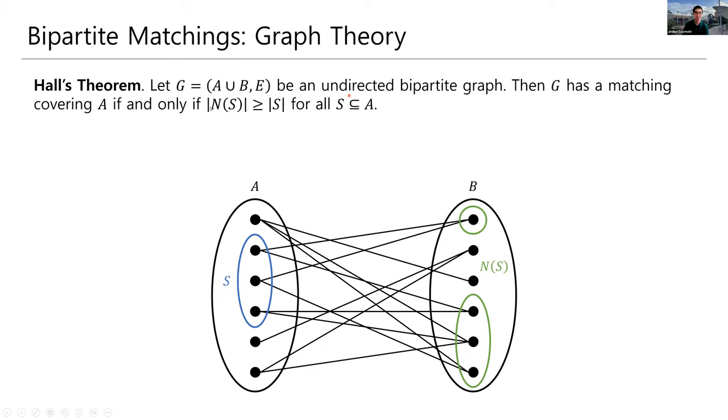So that direction of this proof is very easy. It's easy to show that if this condition is not true, then G does not have a matching covering A. It's the other direction that's a little bit harder, and I encourage you to read through the proof supplement and really understand what's happening in that proof.